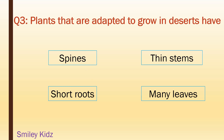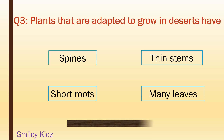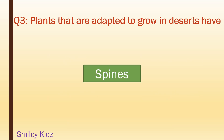Plants that are adapted to grow in deserts have: spines, thin stems, short roots, many leaves. Your time starts now. Your time is up. And the right answer is spines.